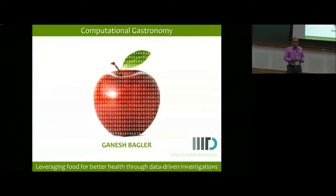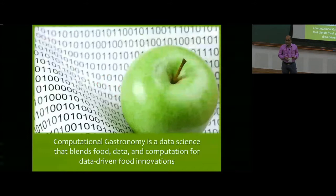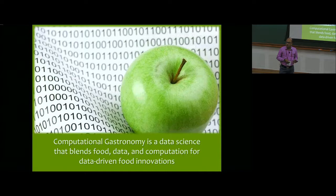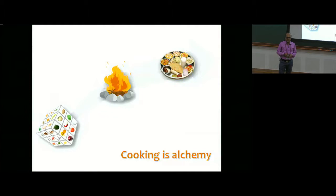I intend to give you an overview, starting with a small story of where the whole thing began, and tell you where we stand today. I look forward to your comments, criticism, and inputs, and hopefully collaborations. We define computational gastronomy as a data science which blends food data with computation—gathering data on different aspects of food to create an integrated resource, ask interesting questions, and design algorithms for specific purposes.